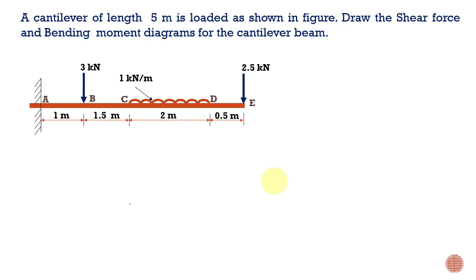Before calculating the shear force, let us consider the sign convention. The downward force is considered as positive. So when finding shear force values at points A, B, C, D, and E, we consider the downward force as positive and the upward force as negative. For bending moment, the clockwise bending moment is negative and the counter-clockwise bending moment is positive.